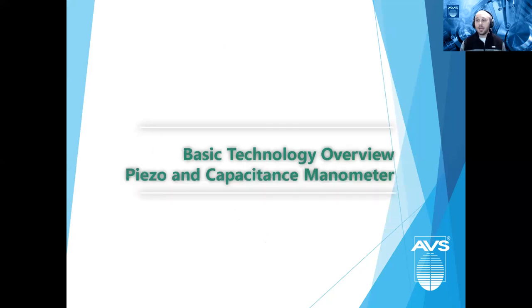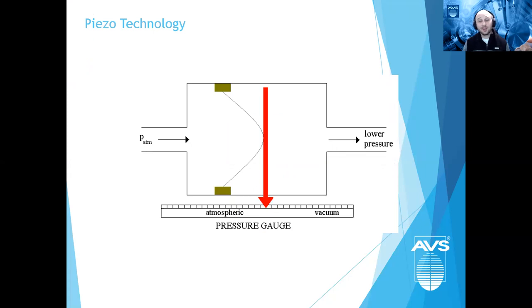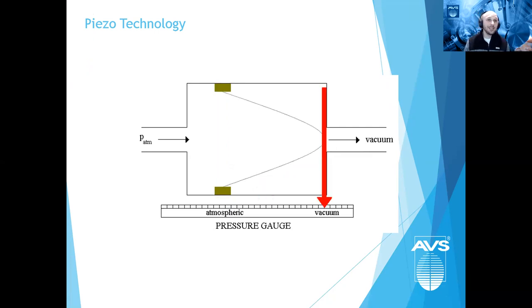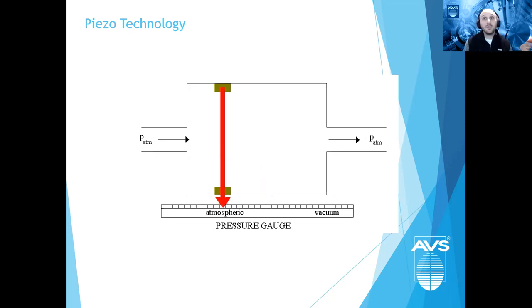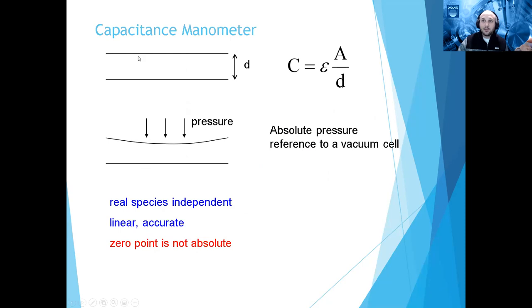Transitioning to piezos and capacitance manometers for the final section. Both work on the same basic principle: there's a diaphragm, and based on the force of the gas, the diaphragm moves. We measure the capacitance or displacement of that diaphragm to determine pressure — the more pressure, the more the diaphragm bends. This is an absolute, direct measurement. A capacitance manometer has a reference side held at 10⁻⁷ torr by a getter pump, which is lower than any capacitance manometer can measure, giving an extremely accurate and fast response to actual pressure regardless of gas composition.